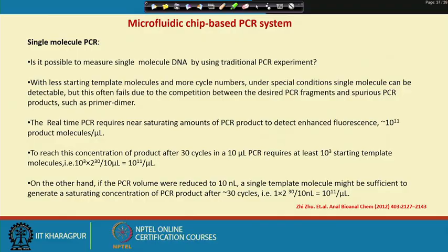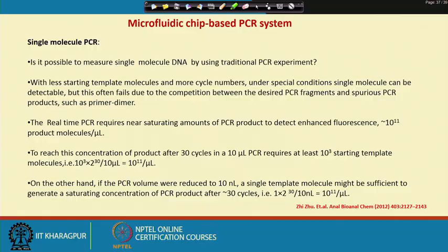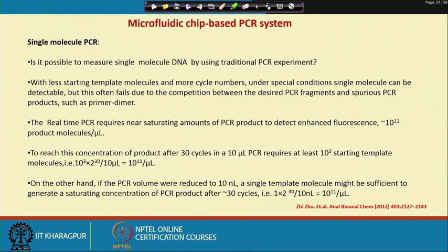How can it be done? It is possible if we decrease the concentration of the PCR mix to the nanolitre scale. If we have around one DNA molecule amplified over 30 cycles in 10 nanolitres, we can reach 10^11 molecules. So only at the nanolitre scale can PCR of a single DNA molecule be achieved.